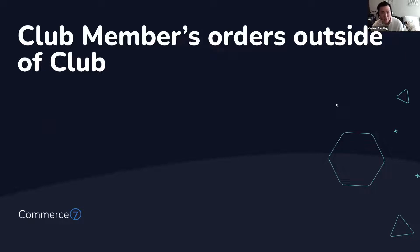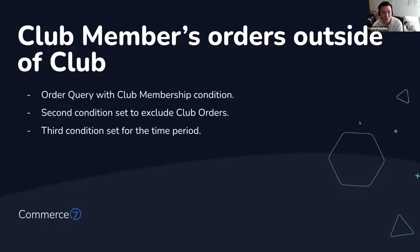The next query I want to talk about is creating a query for club member orders outside of the club shipment. To pull it off, we're going to first create an order query — not a club membership query, but an order query with a club membership condition. You want to create a second condition set to exclude club orders, and then a third condition set for the time period you want to analyze in terms of how many orders your club members are processing outside of the club.